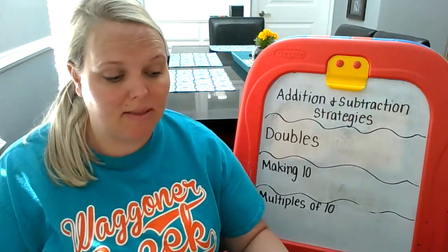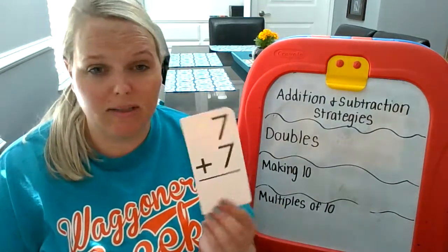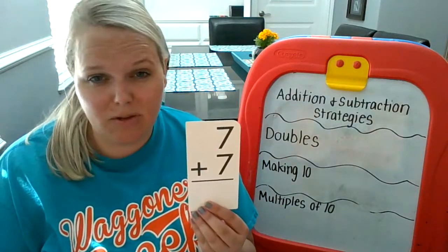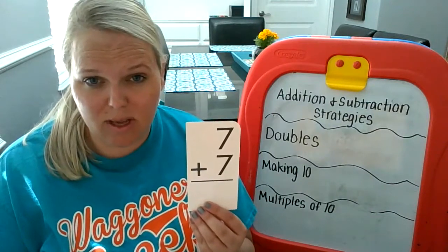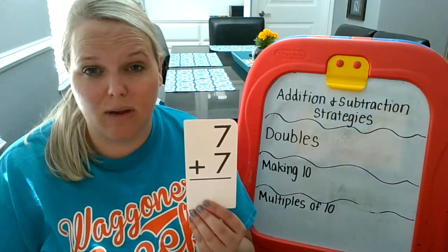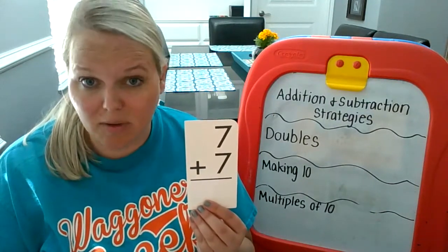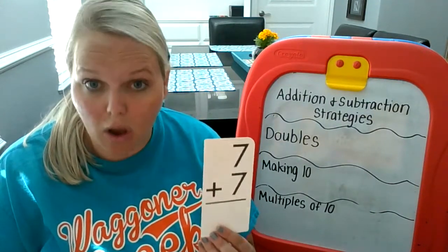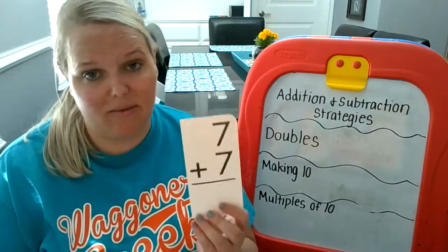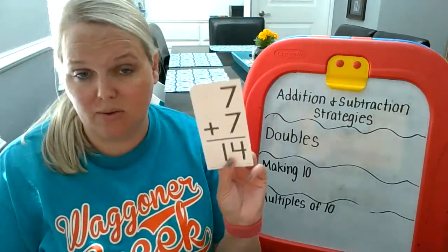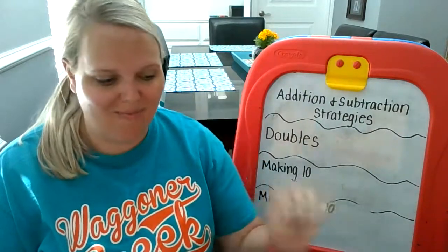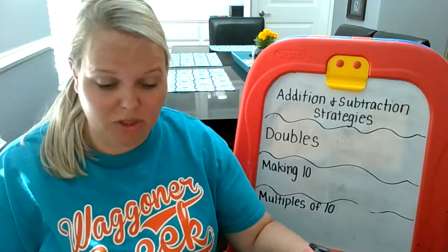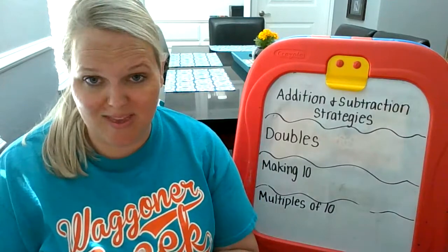That means that if I'm trying to solve 7 plus 7, I do not have to use my fingers to count on and I do not have to use manipulatives. I simply know that 7 plus 7 is equal to 14. So these strategies that I'm going to teach you will help you with that.